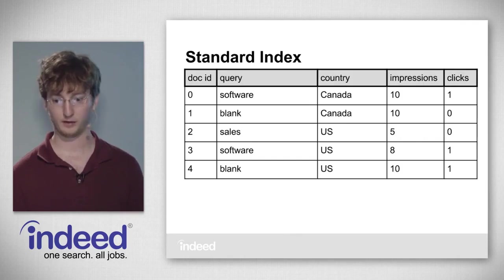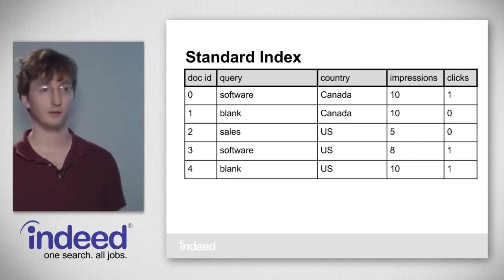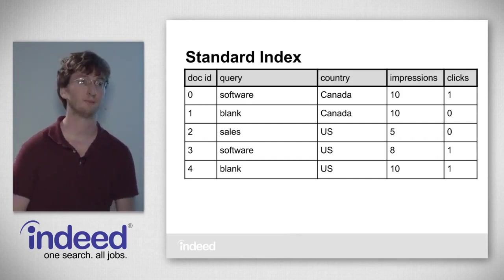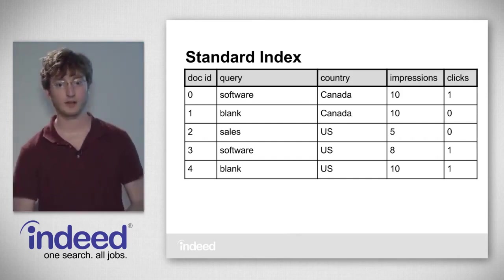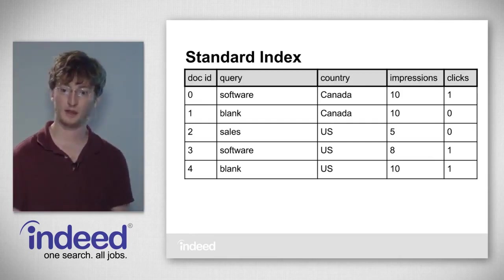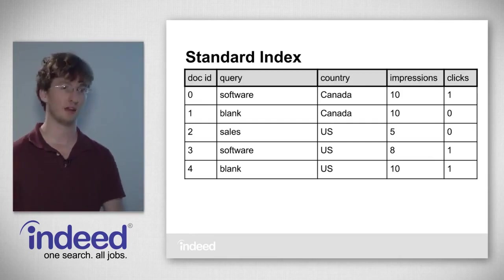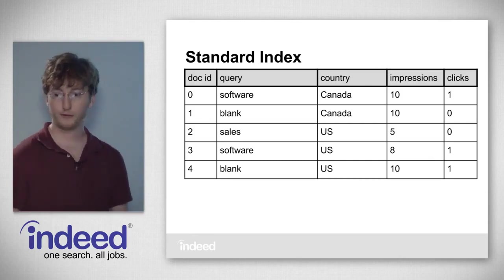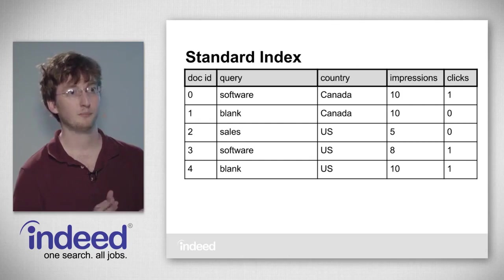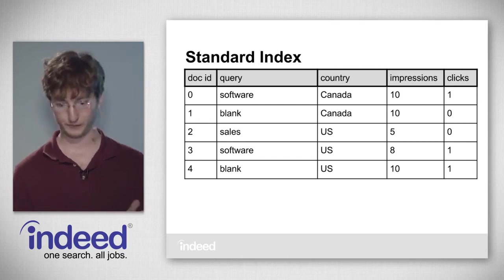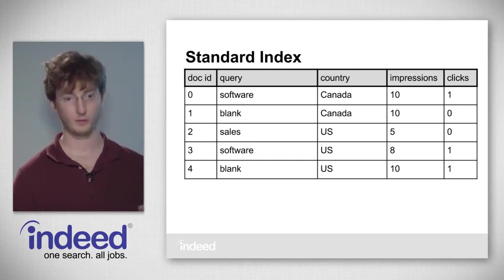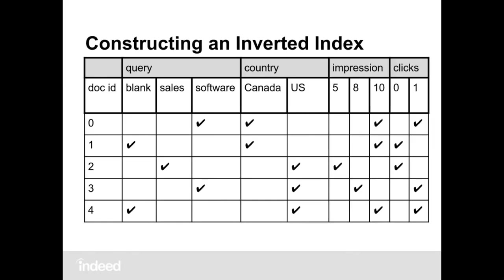Let's talk about how an inverted index is constructed. We start with a standard index — just a list of documents. We have five documents here with four fields: query, country, impressions, and clicks. The first thing we do is find all the unique terms in each field and figure out which term occurs in which document. You can see that 'software' in the query field occurs in documents 0 and 3, and so on.